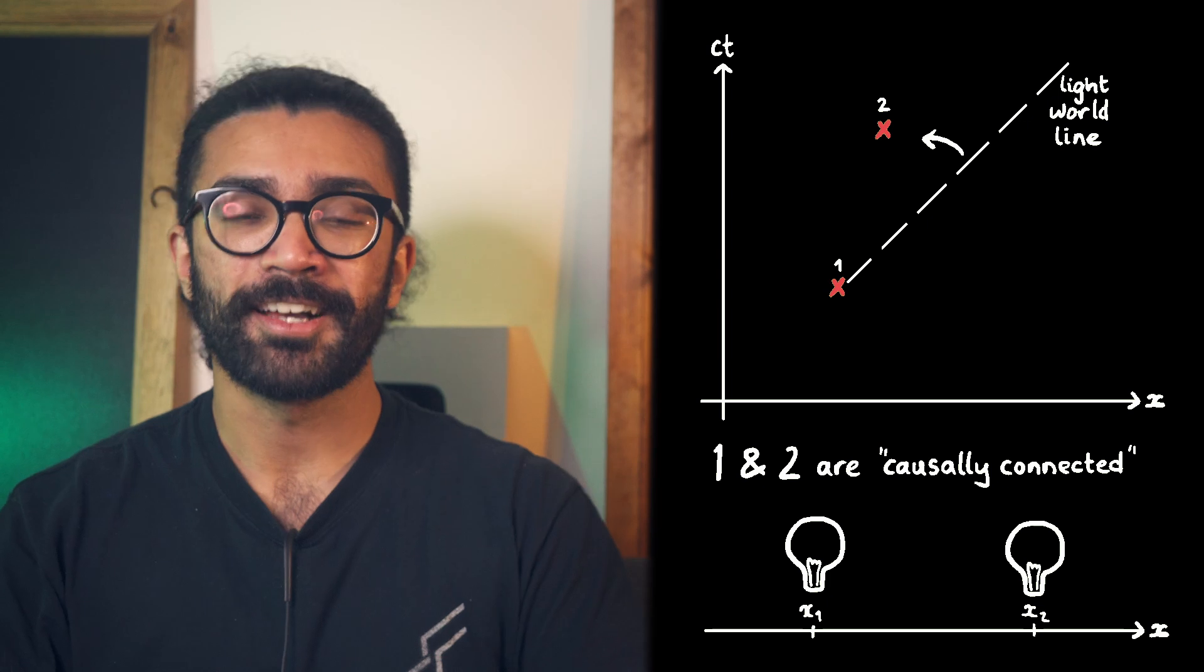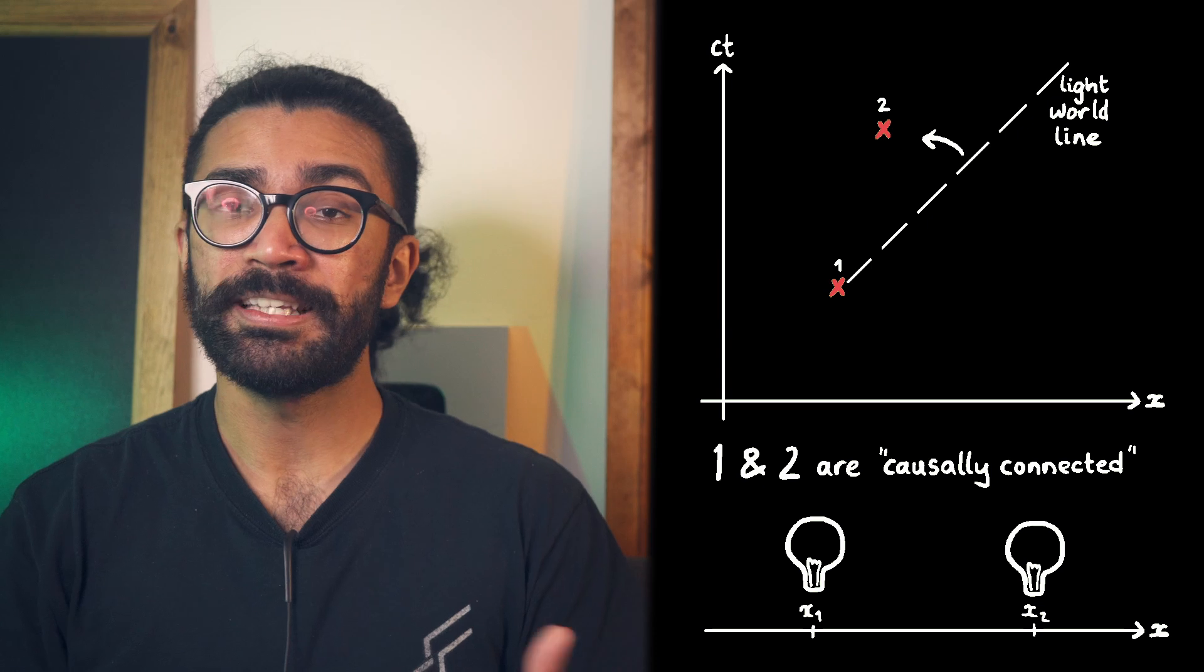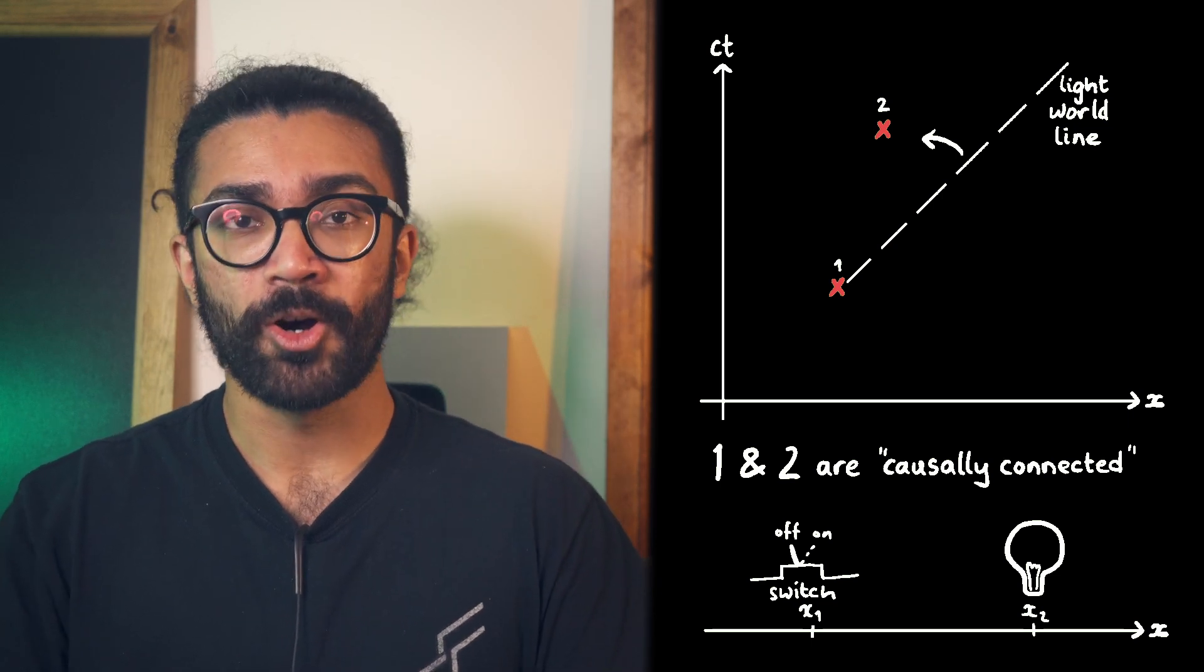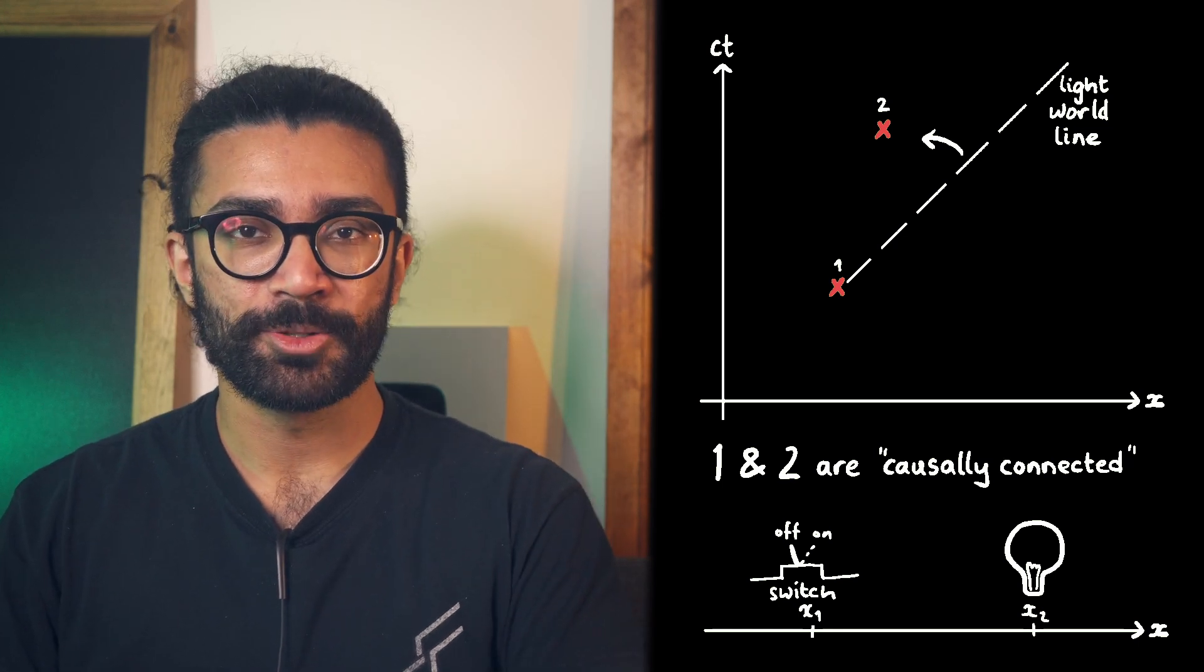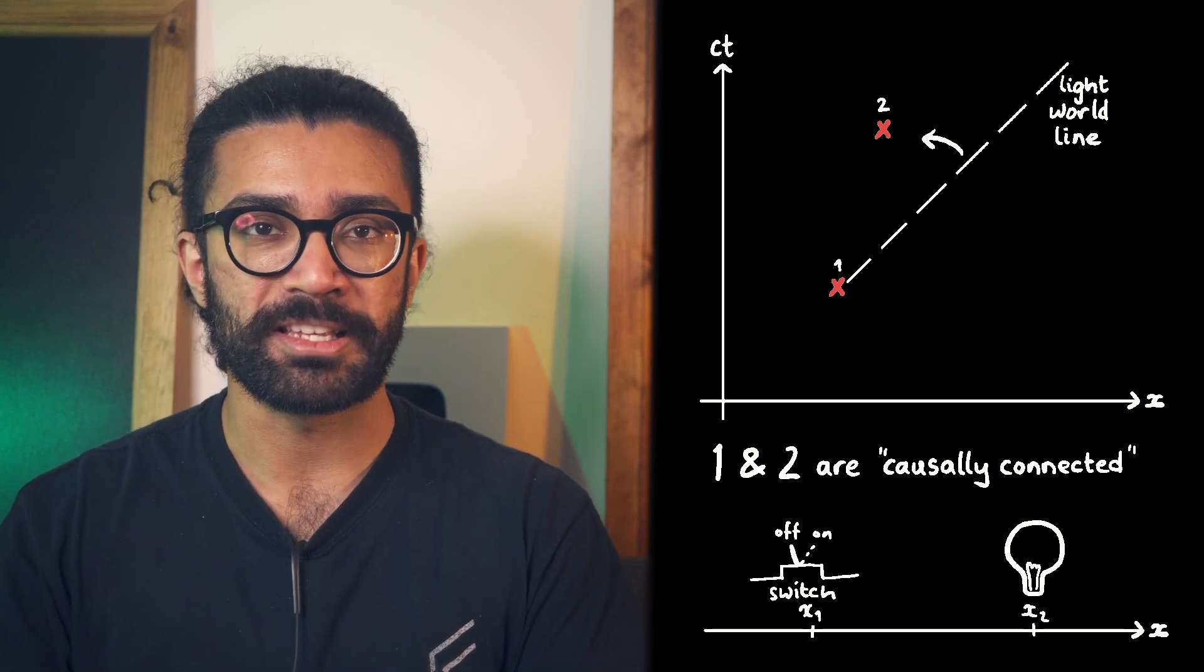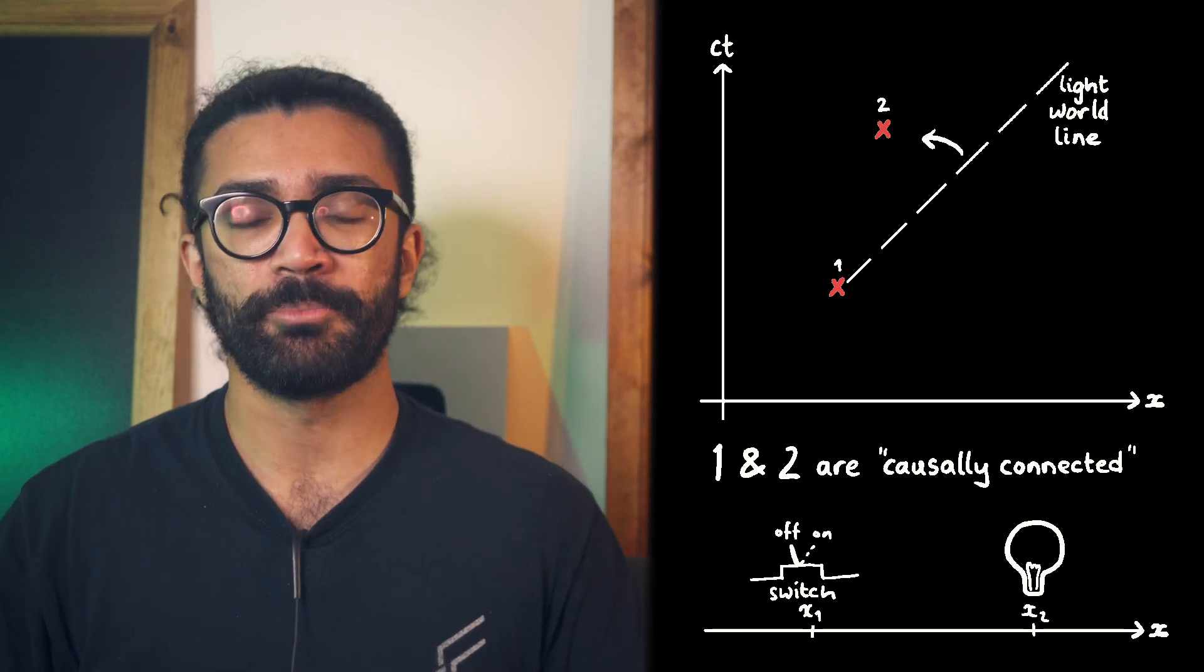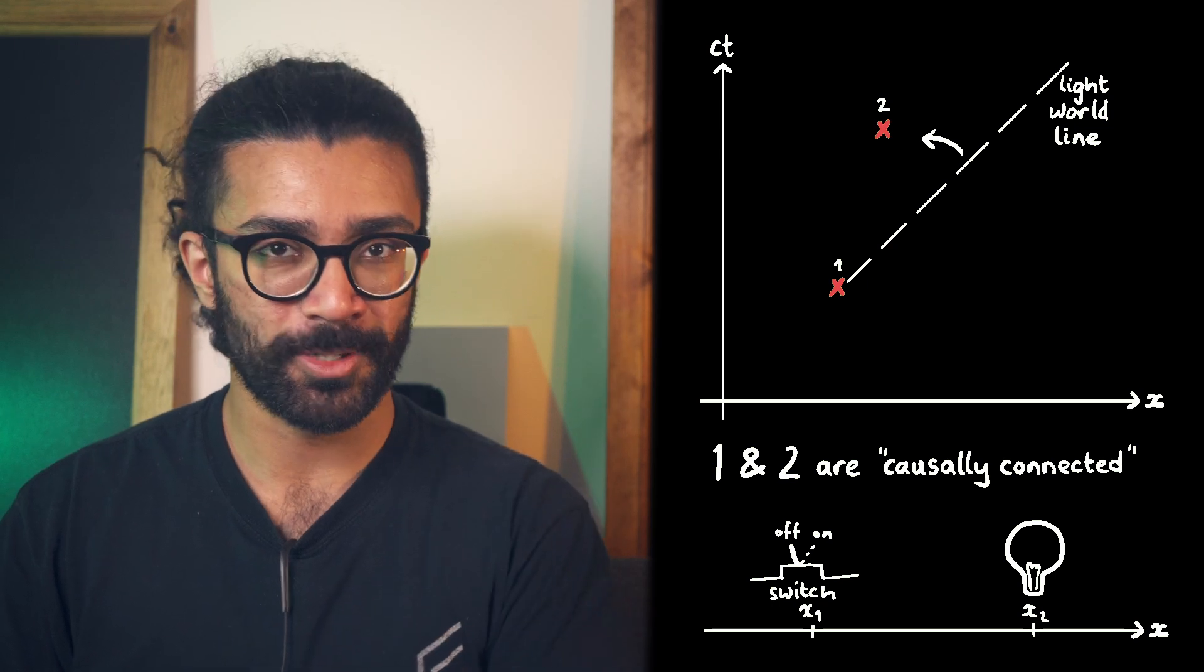With two light bulbs, it's unlikely that the switching on of one caused the other one to turn on. But remember, these events could actually be anything that we want to represent. Like me clicking the switch on a circuit, that's one event, and a light bulb switching on along the circuit, that could be event two. If the switch is connected to the bulb, then these events would have to be causally linked in order for a signal to be sent to the bulb and for it to switch on. That doesn't necessarily mean that my switch is the one that causes that bulb to turn on because my switch could have been part of a different circuit. But the fact is that it is possible that my switch was the one that caused it to switch on.